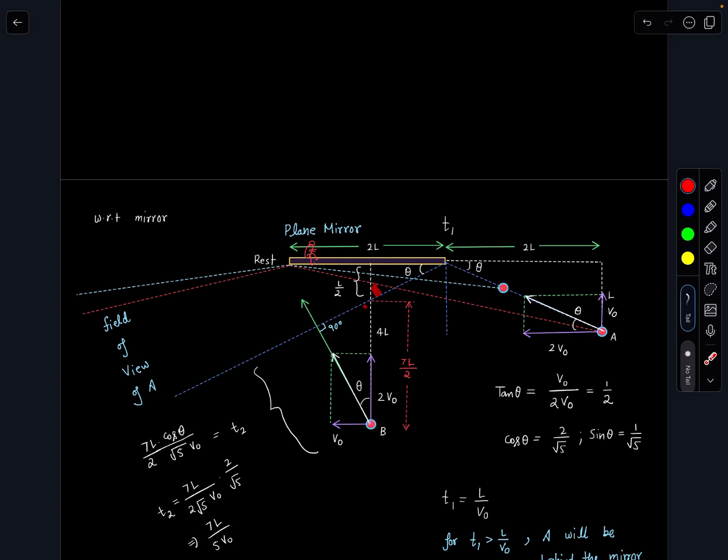If you look at this part carefully, this angle is 90 degrees and this angle is 90 minus theta. Here this is 2V₀ and this is V₀, so tan theta is 1 by 2. You can see the person is moving in a direction perpendicular to the blue line. So nicely these values are adjusted, this angle and this angle are equal. Here I can see that this distance is 7L by 2 cos theta, so time from here to here will be 7L by 2 cos theta divided by root 5 V₀. That is T2, and when we substitute the value of cos theta we are getting 7L by 5V₀.